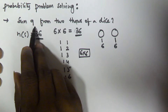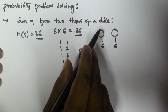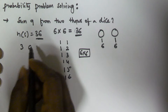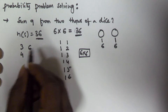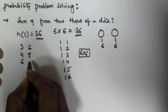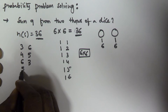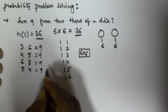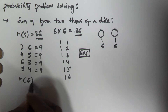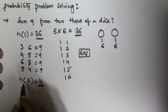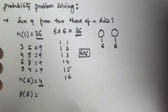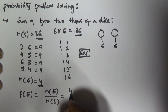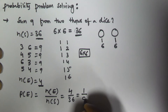We have to find the probability that the sum equals 9 from 2 throws of a dice. The sum is 9 when: first throw 3 and second throw 6; first throw 4 and second throw 5; first throw 6 and second throw 3; first throw 5 and second throw 4. In all these cases the sum is 9, so N(E) = 4, and N(S) = 36. The probability P(E) = N(E) / N(S) = 4/36.